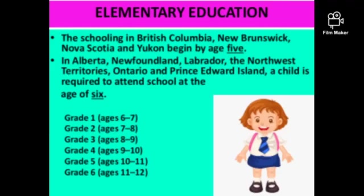Elementary education begins by age five in provinces like British Columbia. In Alberta, Ontario, and certain other provinces, children are required to attend school at age six. Elementary grades run from grade one (ages six to seven) through grade six (ages eleven to twelve).